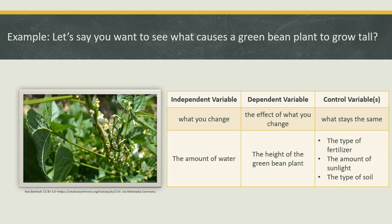The controlled variables would be the type of fertilizer, the amount of sunlight, the type of soil, and anything else you're keeping constant. It's very important to have controlled variables, because if you change the amount of water and the type of fertilizer you add to each plant, you're not going to know what caused the plant to grow taller — whether it was the water or the fertilizer. So you want to make sure everything is kept the same except for one variable, and that's your independent variable.